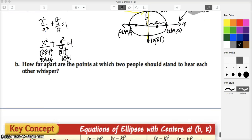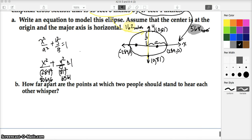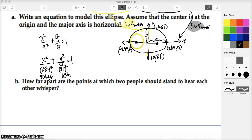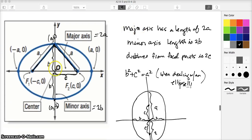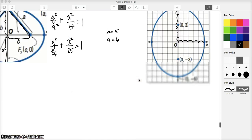Now the next part they ask us is how far apart are the points at which the two people should stand to hear the whisper. And so what we're talking about here is this distance here. And do you remember how all of these are related? We had it way back in the beginning of the first video. We talked about the relationship between the a value, which is half the length of the major axis, and then the b value and the c value. We talked about the fact that it kind of works as the Pythagorean theorem, except all the letters are all confused. So it's b squared plus c squared equals a squared.